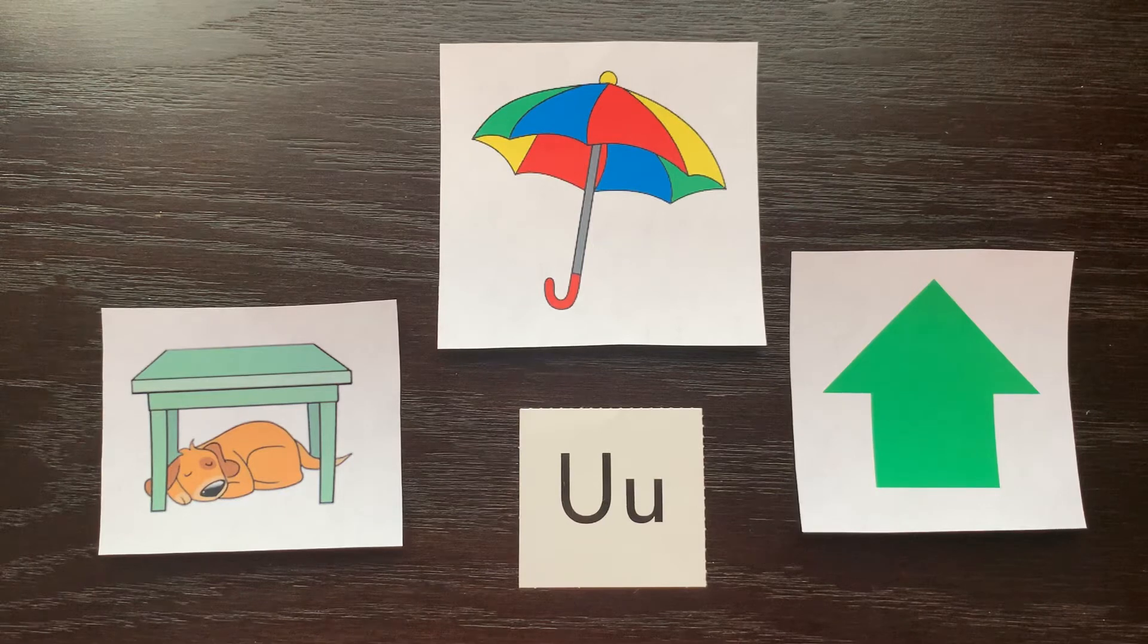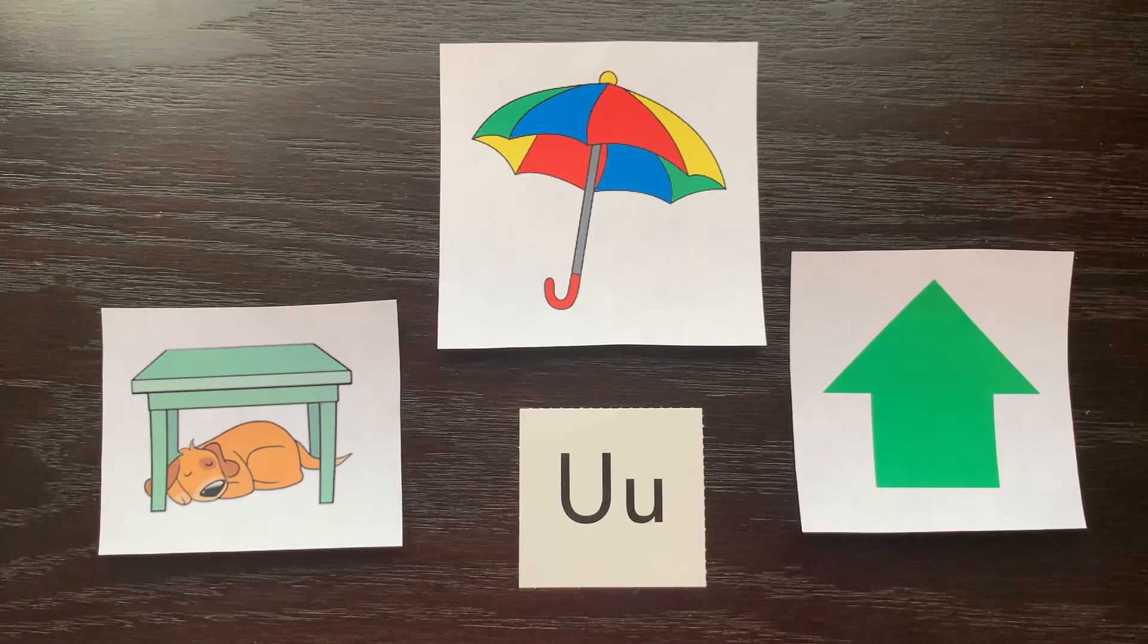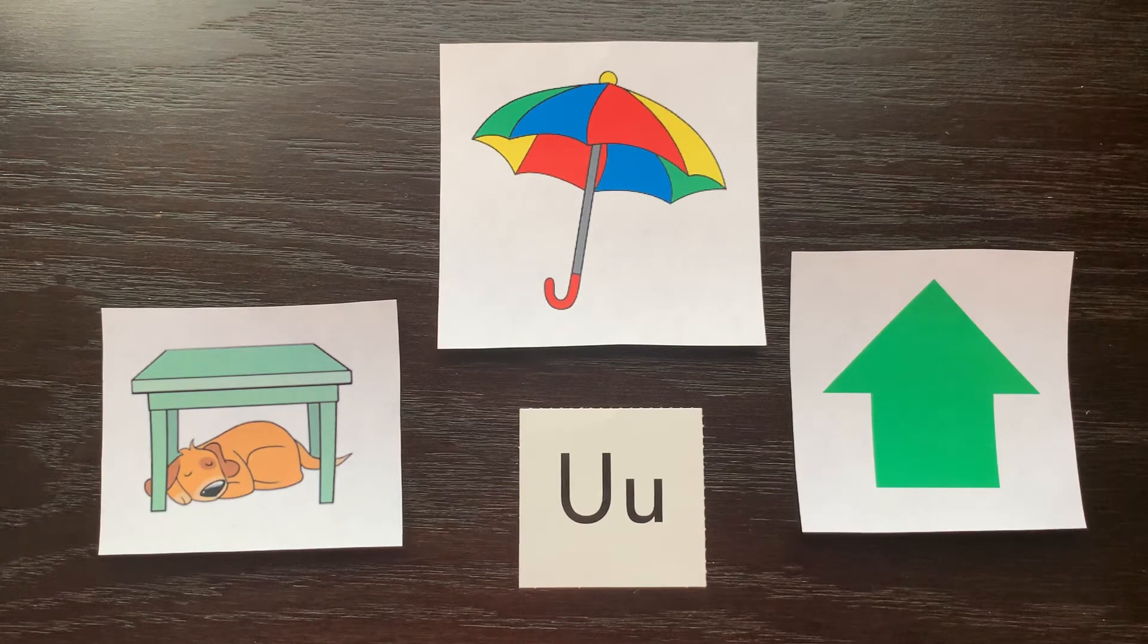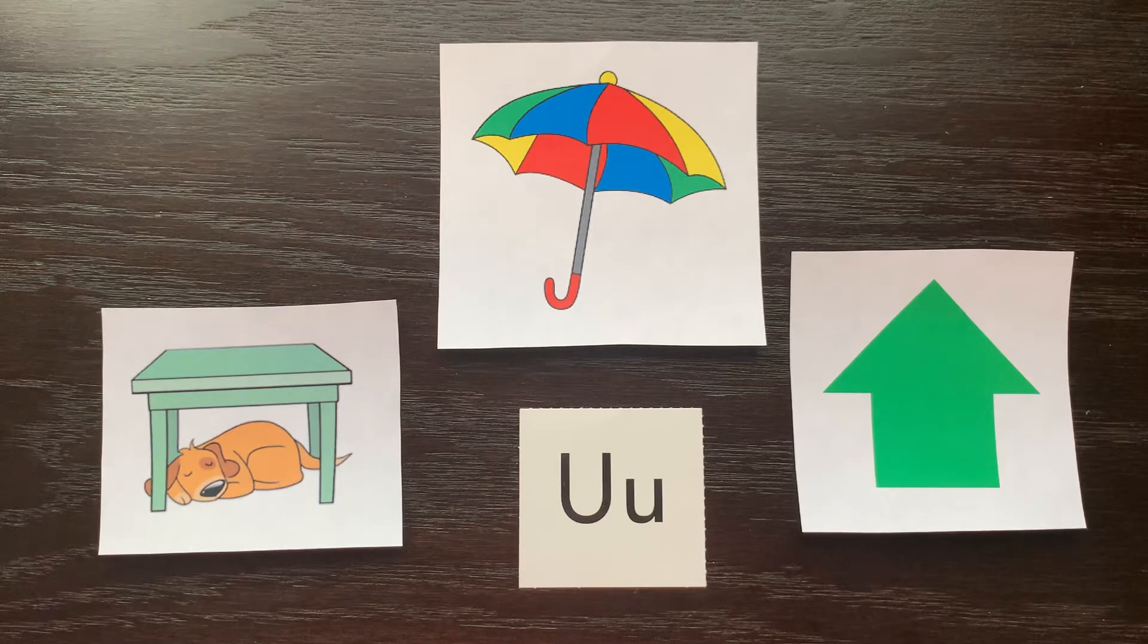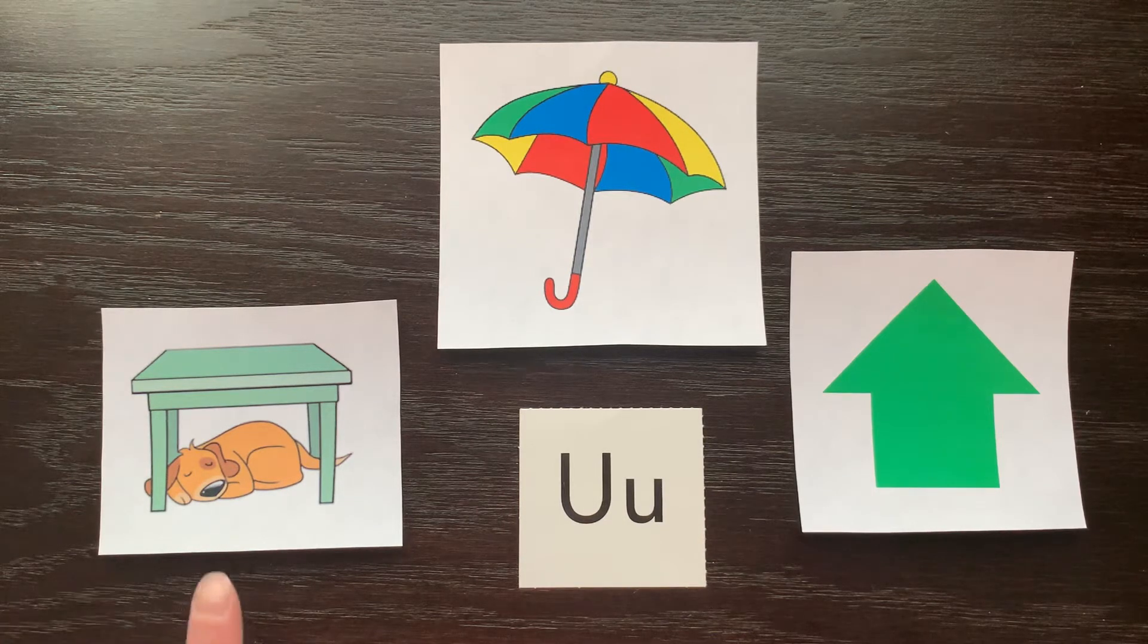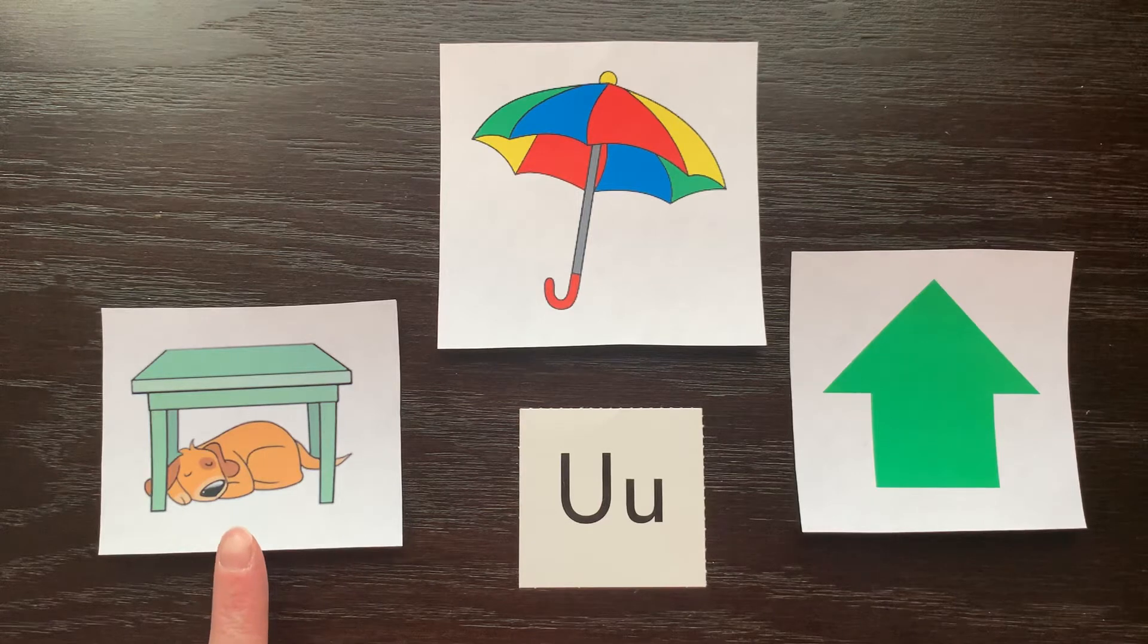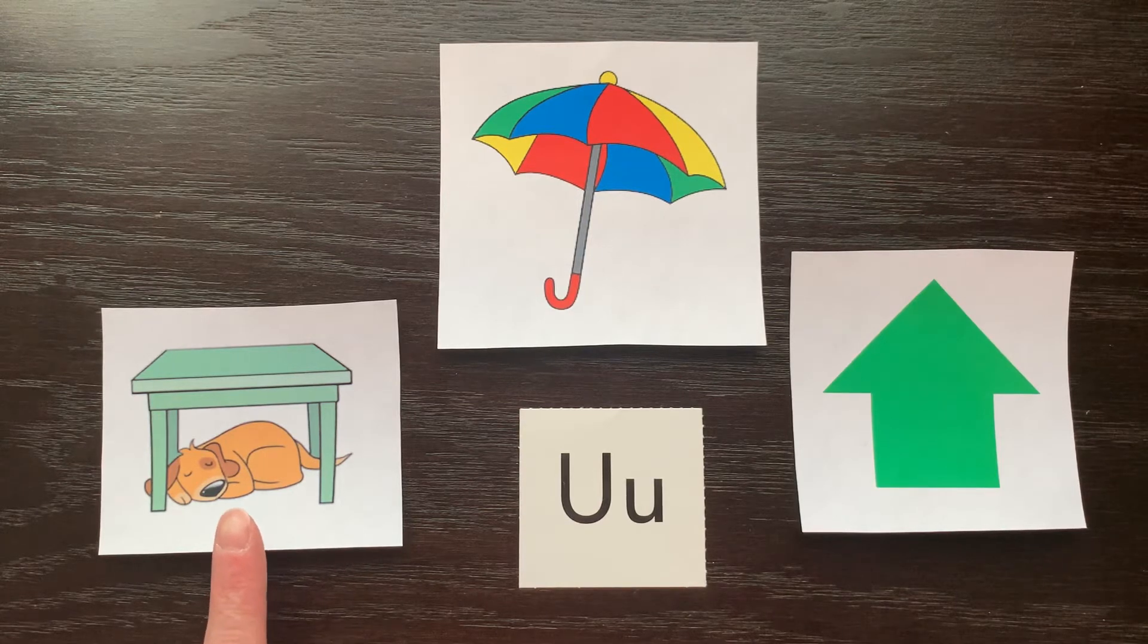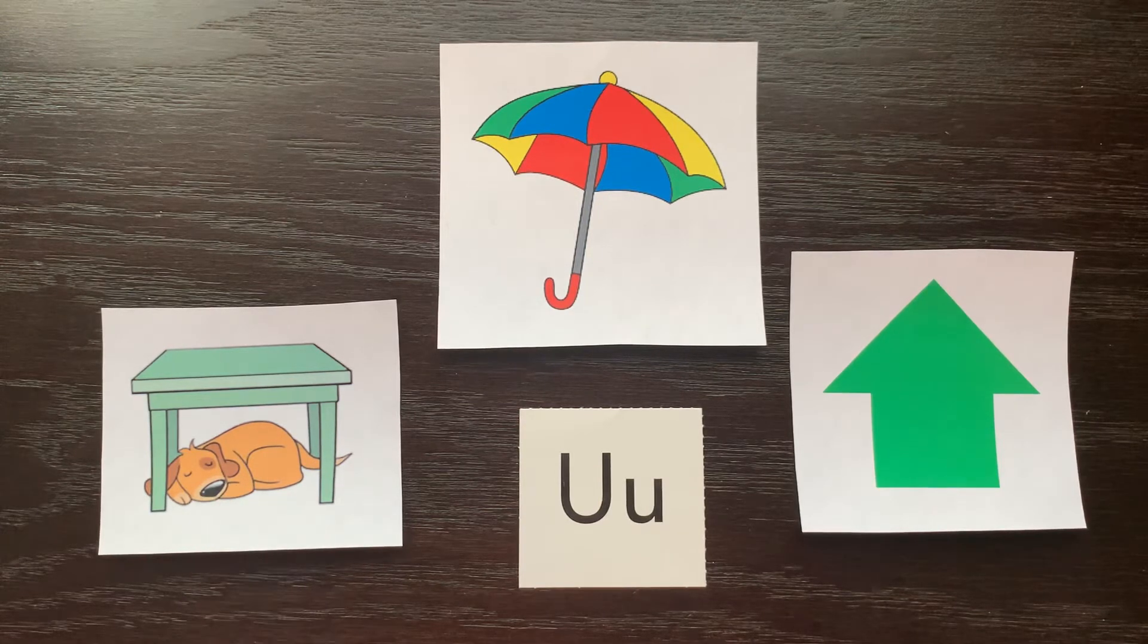U sometimes also says its name, U. These are pictures that have the uh sound. Let's talk about them. The dog is under the table. Under is a word that starts with U.